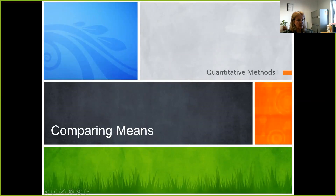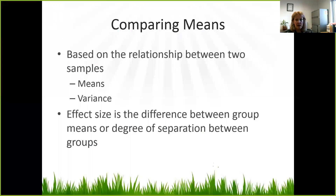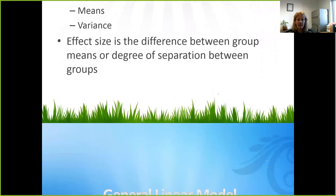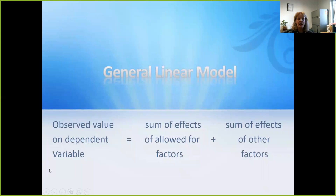When we're talking about comparing means, it's important to remember that comparing means is really based on the relationship between two samples. You could have a pre-test post-test sample, or you could have a treatment and control group sample. You really want to think about comparing the means of two different groups, and both of those groups are going to have means and variance. The effect size is the difference between the group means, or the degree of separation between the groups.